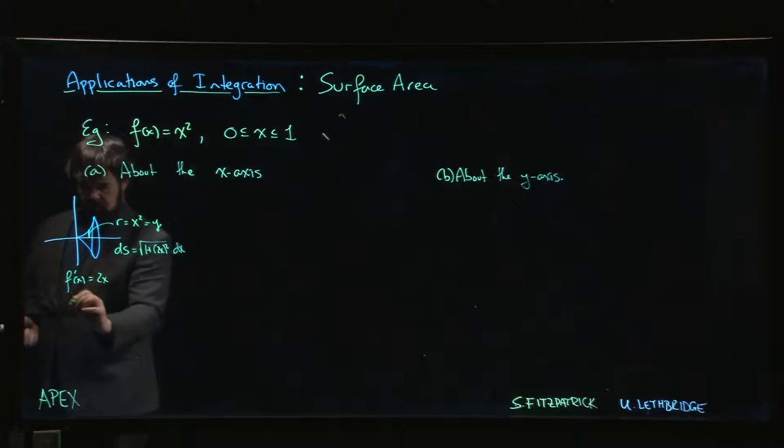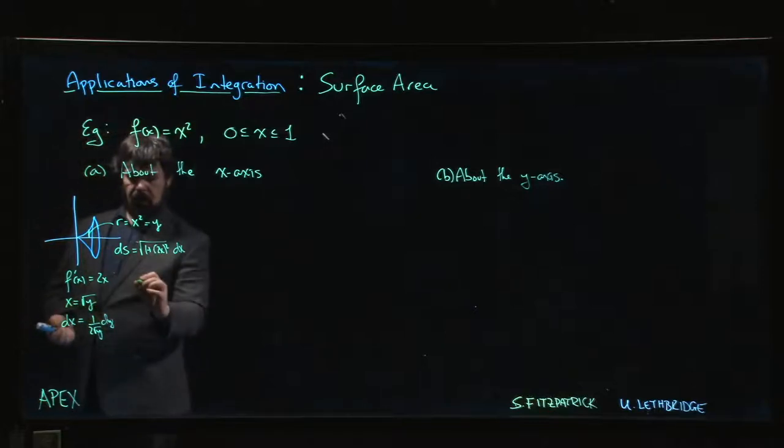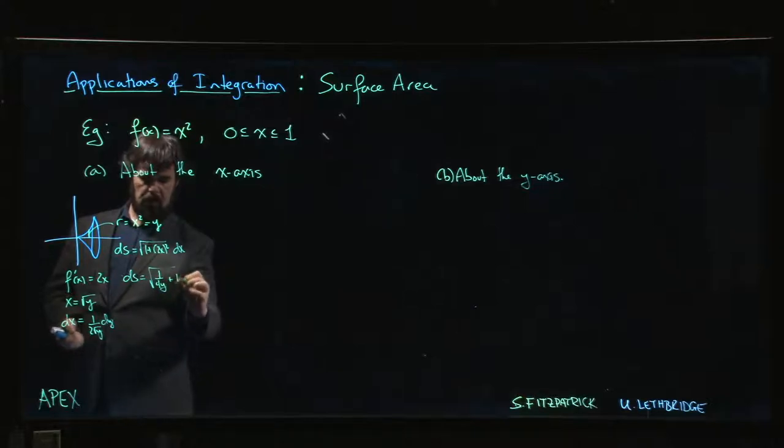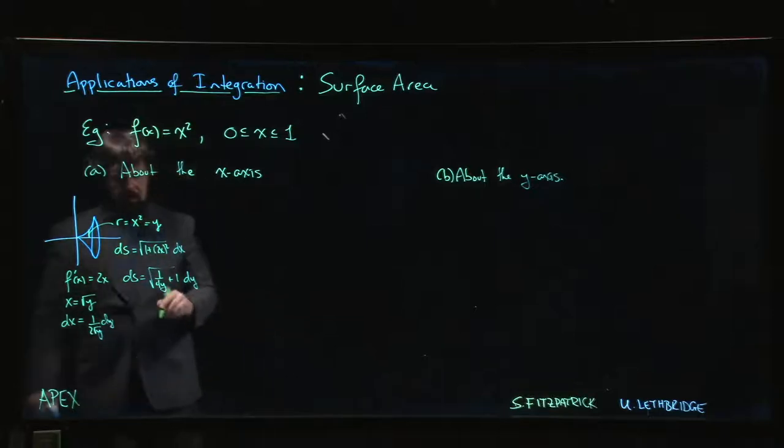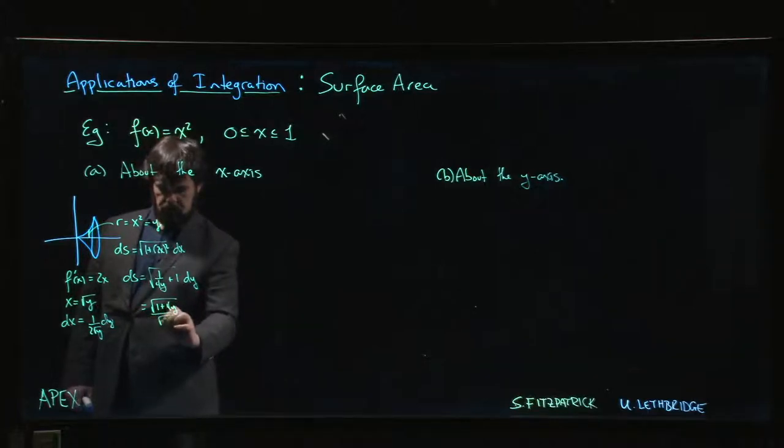Your other option here is you could say that x is the square root of y, so dx is 1 over 2 root y times dy. So another way to write ds is as the square root of, if we square that we get 1 over 4y plus 1, and then we integrate with respect to y. Maybe we want to clean that up and write that as 1 plus 4y over root 4y with a common denominator.